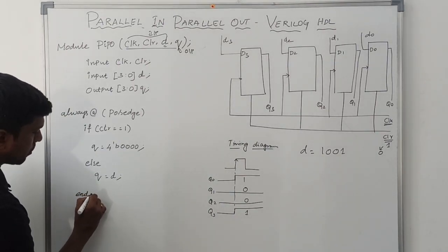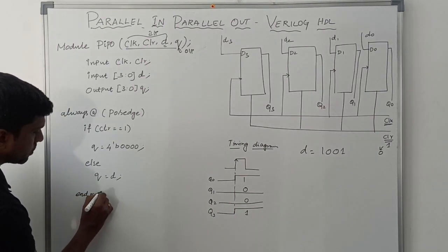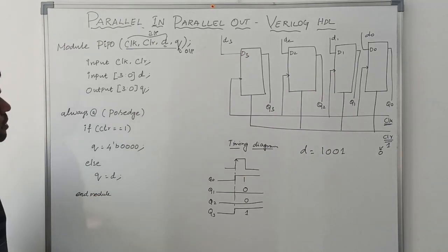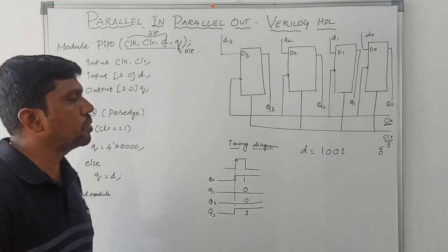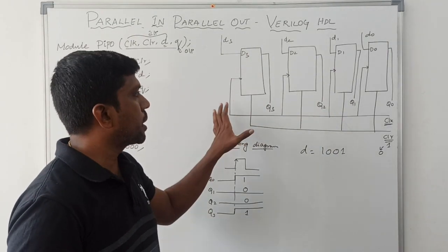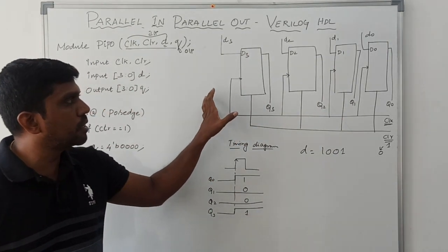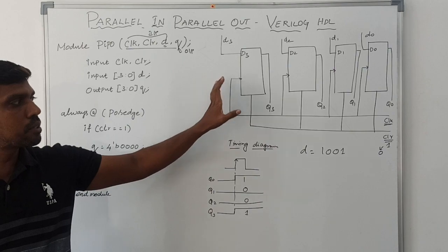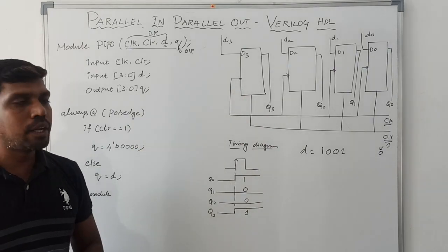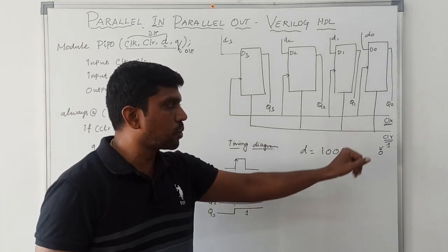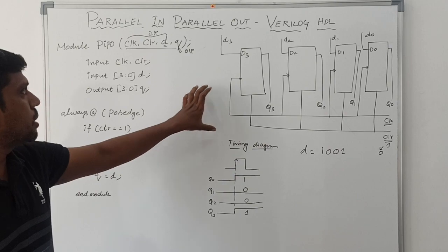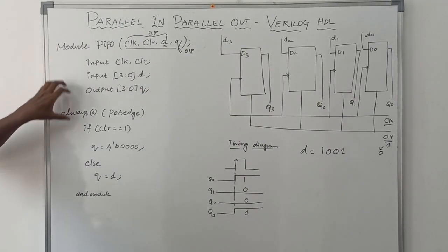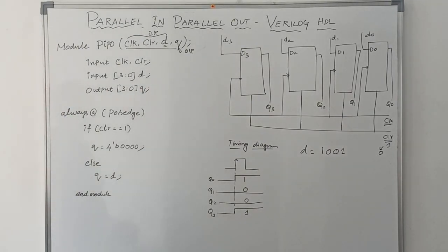Then we write 'endmodule'. This is the simple Verilog HDL code for parallel-in parallel-out. First draw the block diagram, then assign input and output variables and controlling signals. Using this block diagram, you can write the program very easily.